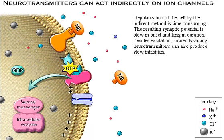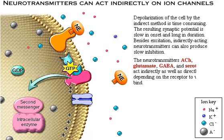Besides excitation, indirectly acting neurotransmitters can also produce slow inhibition. The neurotransmitters acetylcholine, glutamate, GABA, and serotonin can act indirectly as well as directly, depending on the receptor to which they bind.